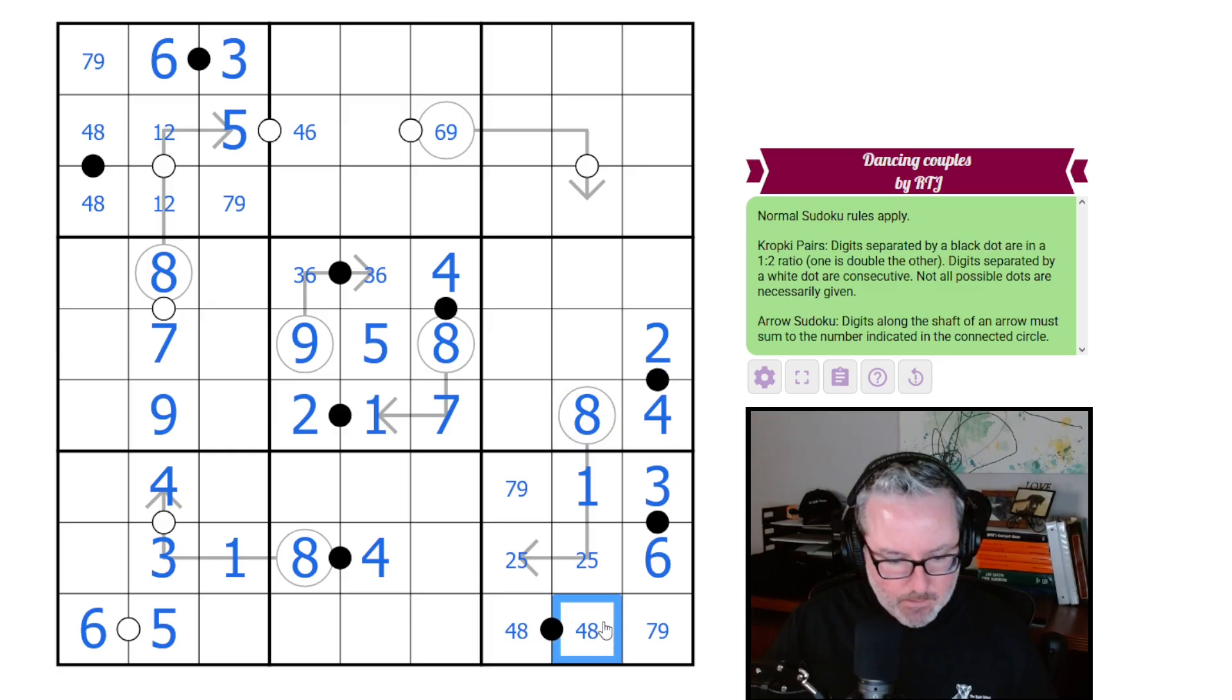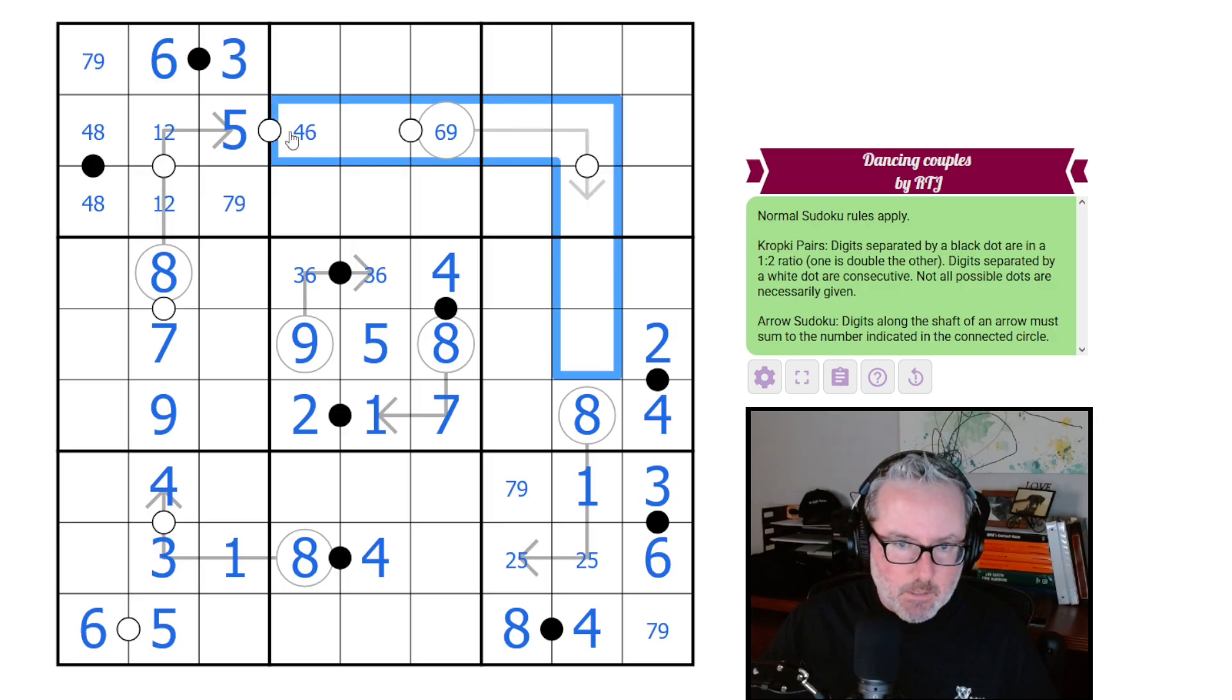Let's keep moving around the dance floor. This cannot be a three, six. It's going to be from one, two, four, and eight. You can't be one or two, and you can't be eight, so you are four, which means you have to be the two because obviously we can't repeat the eight.